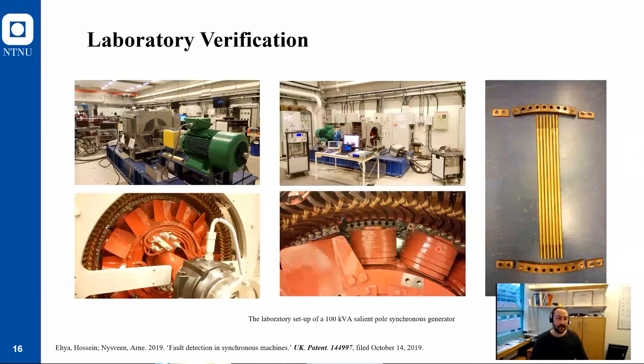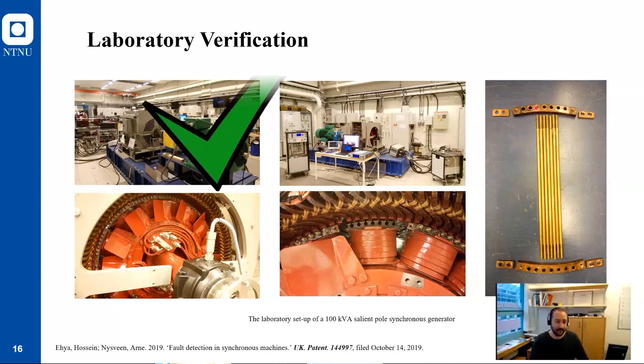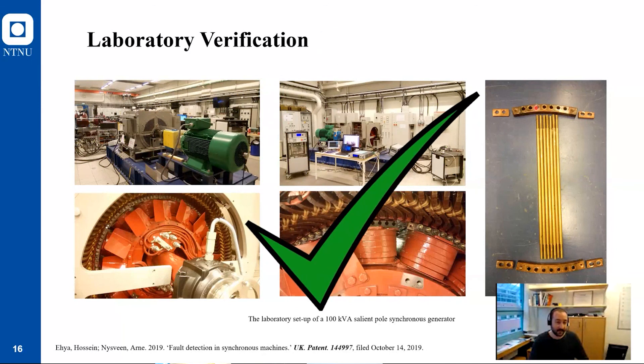The next step is to verify the idea in a laboratory. We have a really advanced setup in NTNU. It is a 100 kilowatt ampere salient pole synchronous generator. It resembles a typical Norwegian hydropower plant generator. It has 14 poles. We can apply different types of fault from short circuit, dynamic eccentricity, broken damper bar, broken end ring in this setup. The idea that we applied in this setup also worked really well. The results were very satisfactory, but as you know, in software and also in laboratory, everything is kind of ideal. So we need to verify in a real power plant.